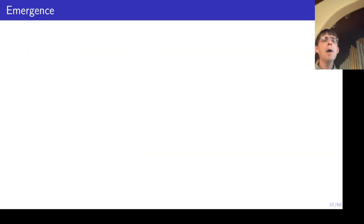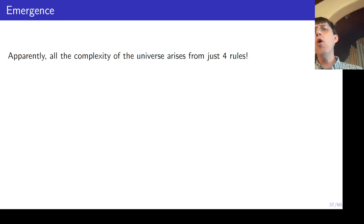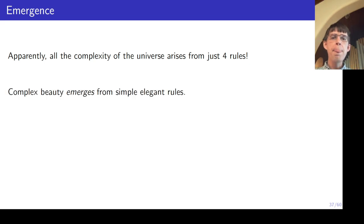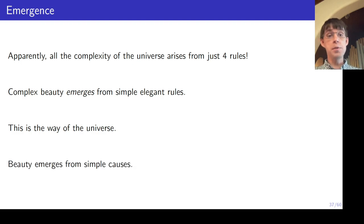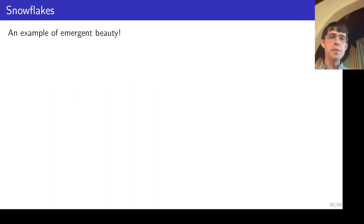Anyway, God has created a universe with a hidden order, right? Things which seem to be super complex actually are based on very simple principles. The universe has a structure. This is a profound and unexpected beauty that I think in the history of humanity, certainly in the early days of humanity, there was no reason for anybody to believe that this would be true or to expect this, but it is true. I want to talk about a little something called emergence. So apparently all of the complexity in the universe arises from just four rules. There's actually three rules. Complex beauty emerges from simple, elegant rules. This is the way that the universe works. Beauty emerges from simple causes.